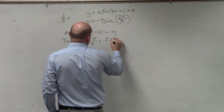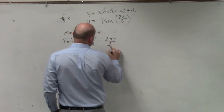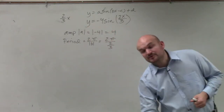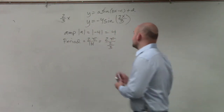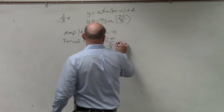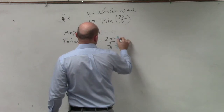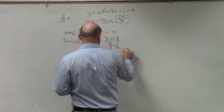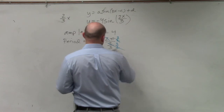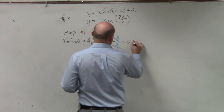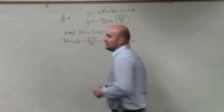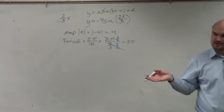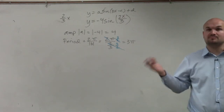So we have 2 pi divided by 2 thirds. Whenever we have a whole number divided by a fraction, we multiply by the reciprocal on the top and the bottom — multiply by 3 over 2. The 2's divide out, the reciprocals multiply to 1, and you're left with 3 pi. That means it takes the graph a distance of 3 pi to repeat itself, or to complete one cycle.